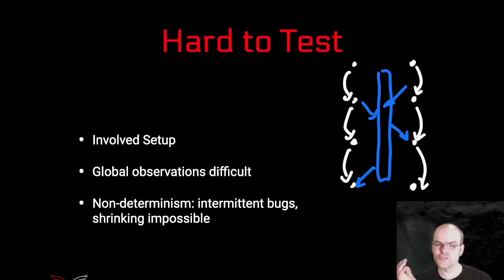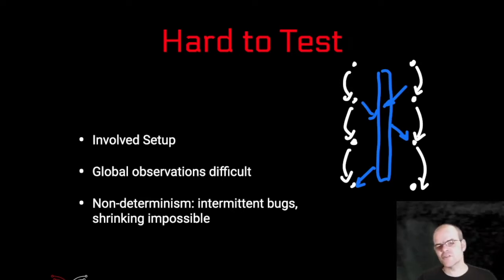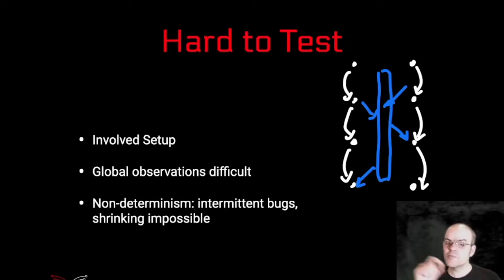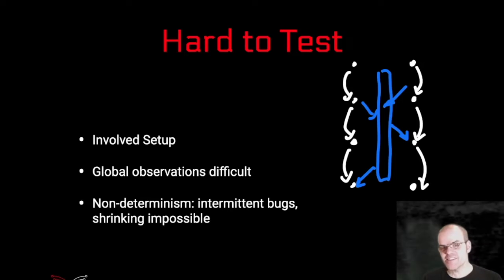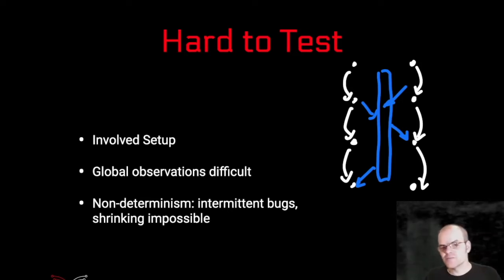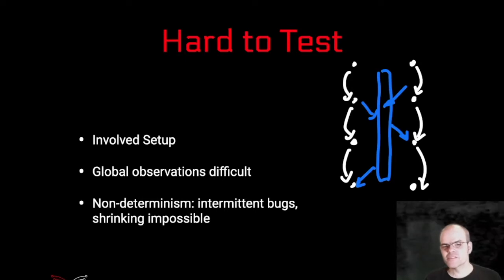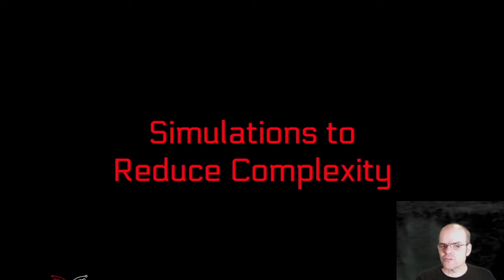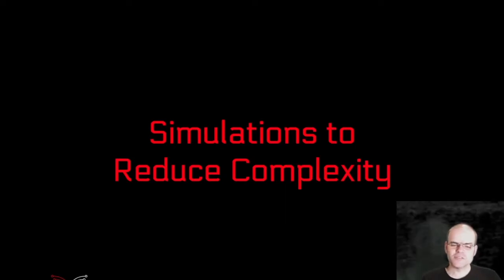Non-determinism also makes shrinking — the process of simplifying your input data to find a minimal counterexample — basically impossible. Because if you simplify your test data and the bug goes away, you never know whether that is actually a consequence of the shrinking itself or just because the scheduling of those threads happened to be a bit different. So what can we do to make concurrent and distributed programs more tractable? We can try to reduce the complexity via simulations — and that's the content of this presentation.